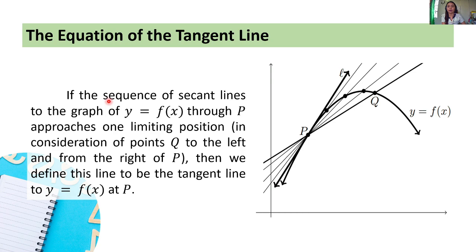Next, if the sequence of secant lines to the graph of y = f(x) through P approaches one limiting position — in consideration of points Q to the left and from the right of P — then we define this line to be the tangent line to y = f(x) at P. Again, this is our function y = f(x), and we have here points P and Q.